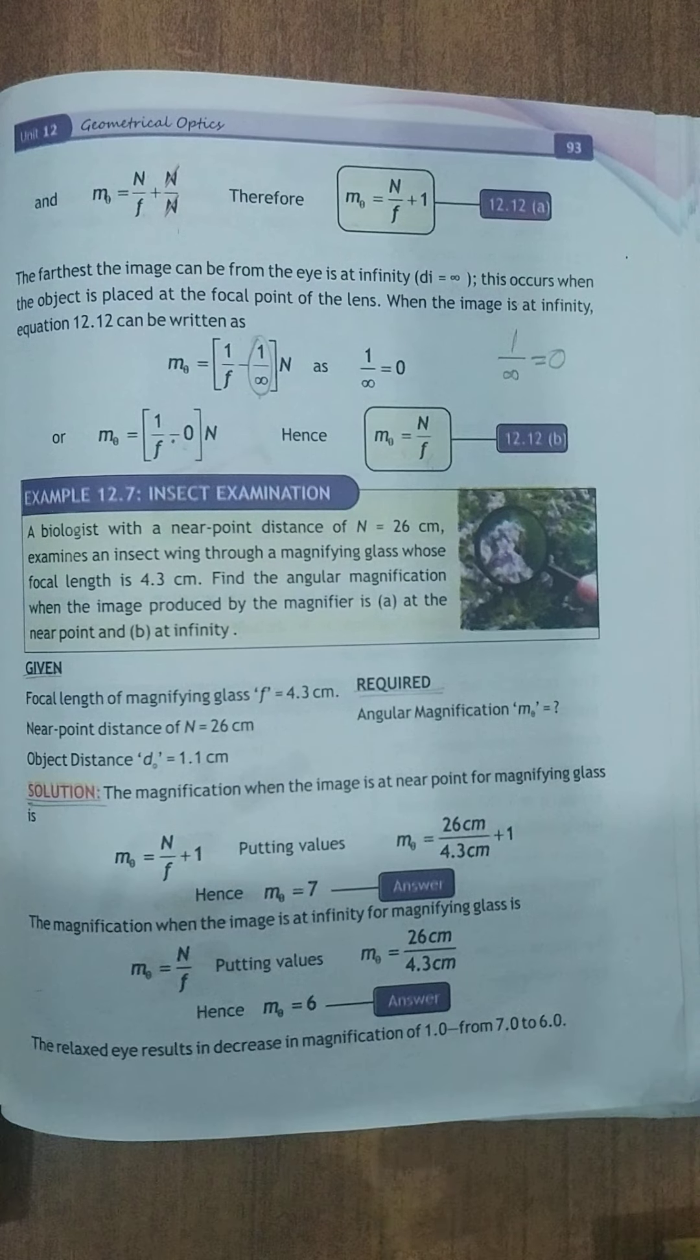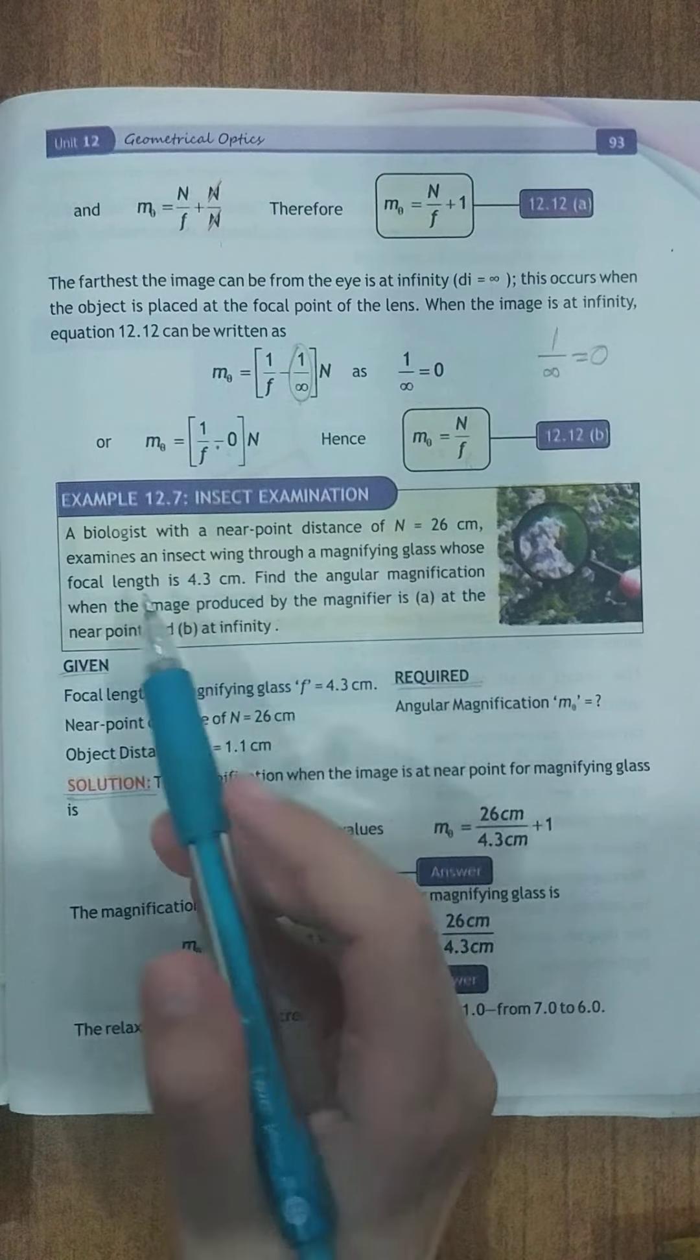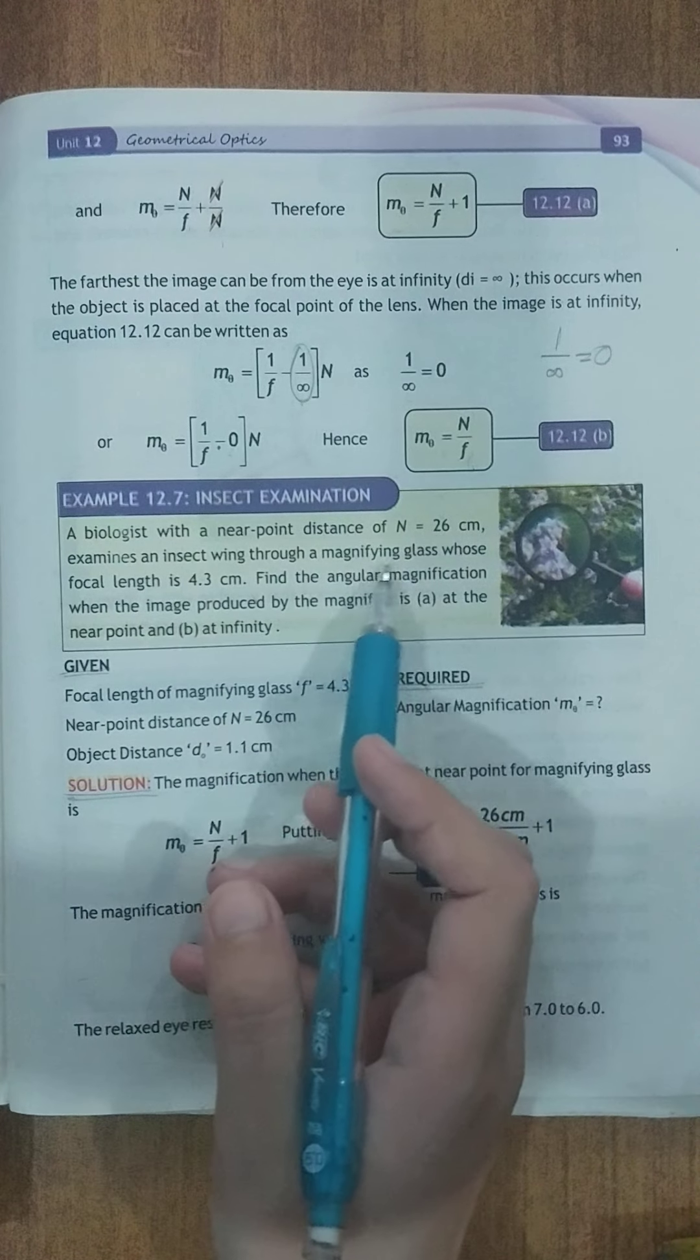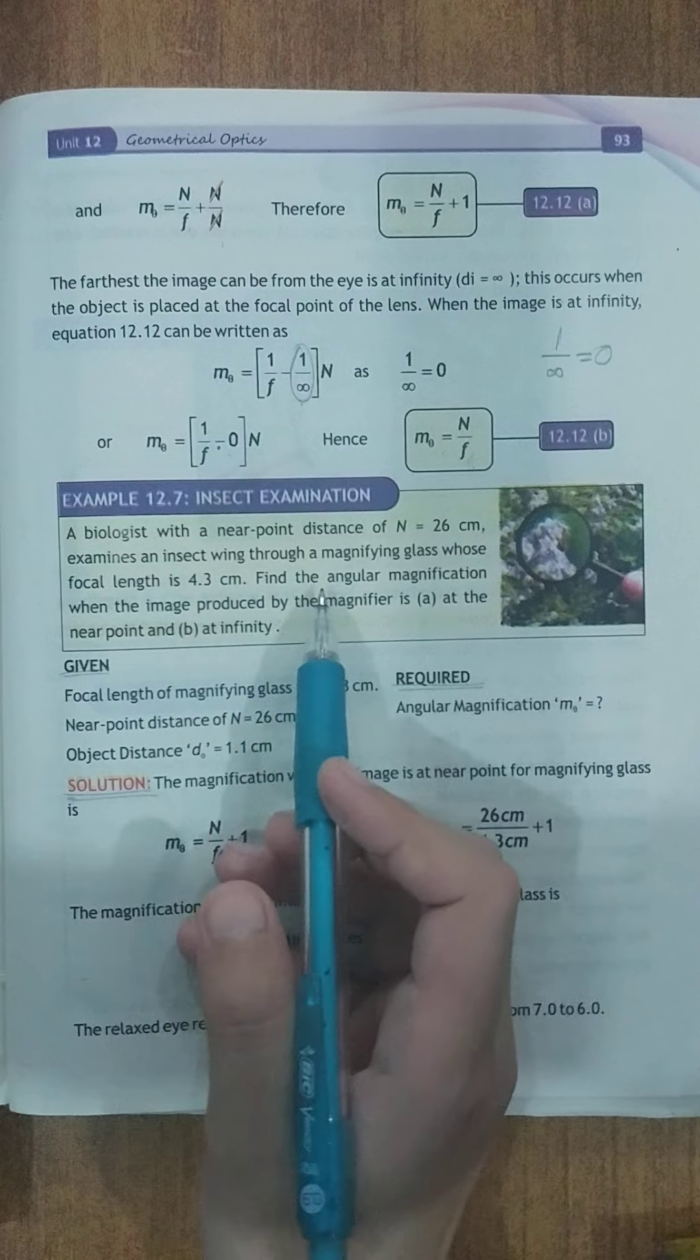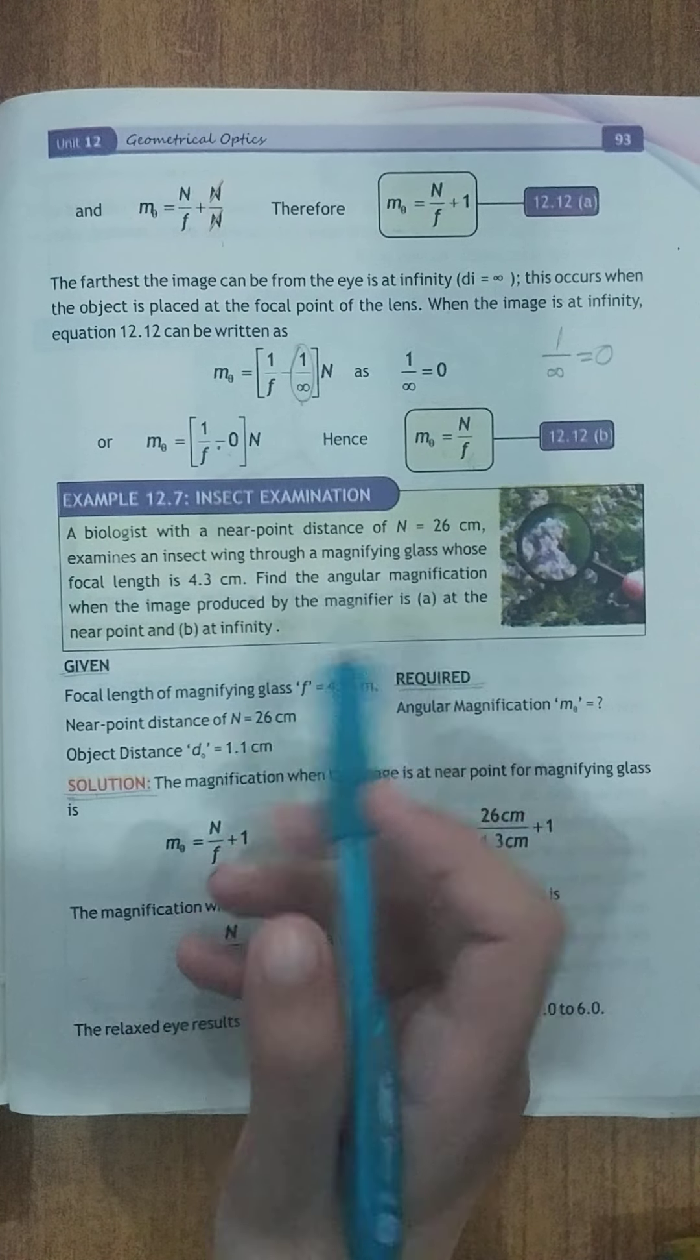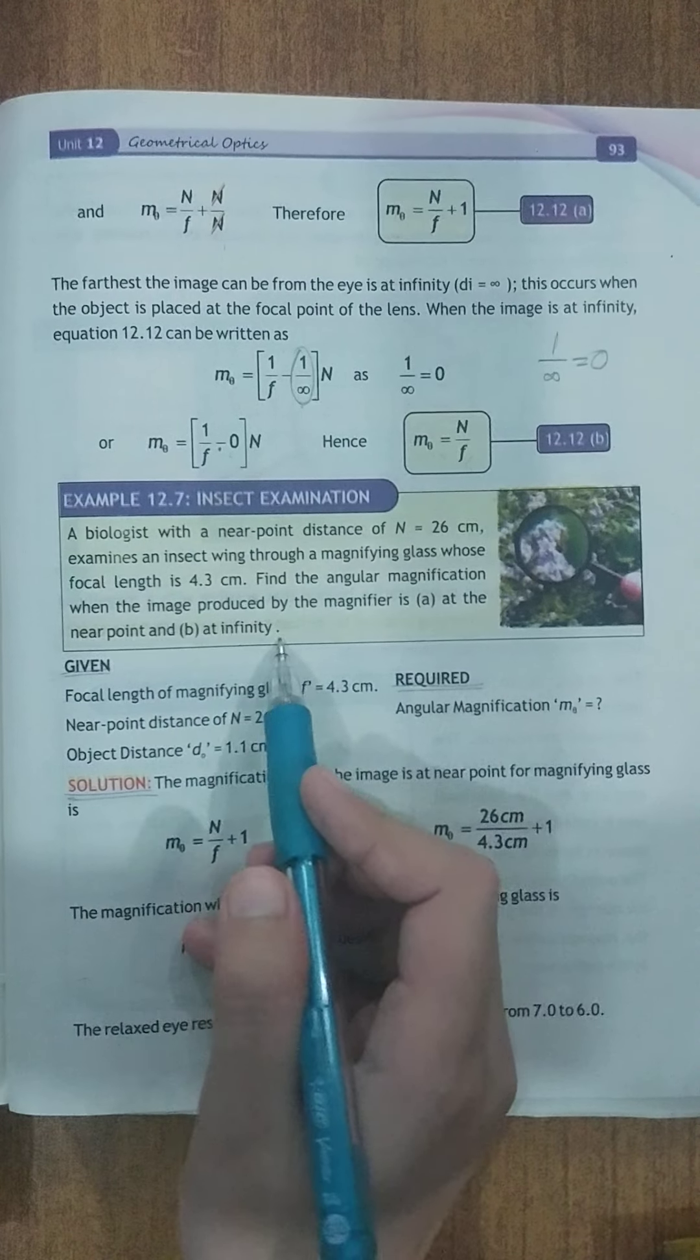Book ke page number 93 pe aapko example 12.7 nazar aayega insect examination. A biologist with a near point distance of n equals to 26 cm examines an insect wing through a magnifying glass whose focal length is 4.3 cm. Find the angular magnification when the image produced by a magnifier is at the near point and at infinity.